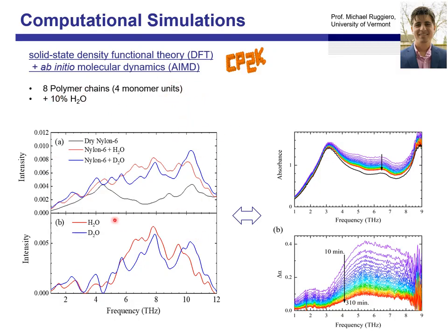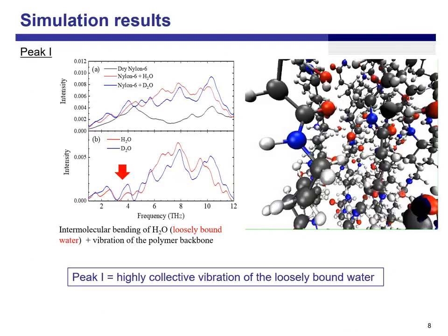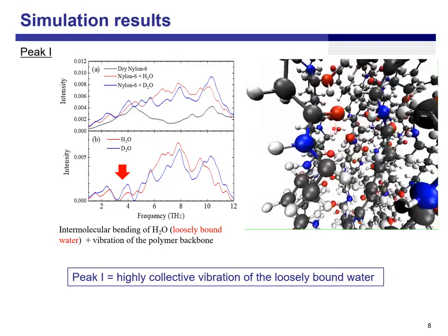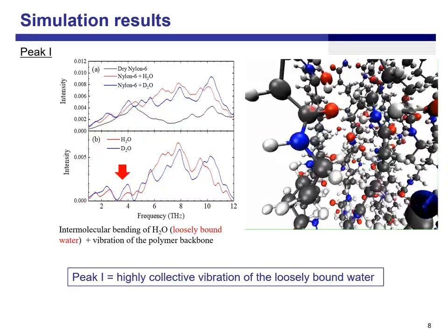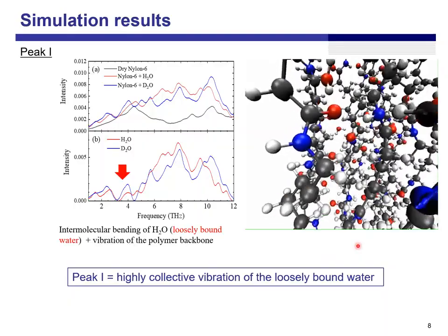This is the result. First, let us compare the simulated spectrum of dry Nylon 6 — the spectral pattern shows very nice agreement with the experimental one. Then he made simulations for hydrated nylon, shown as red and blue lines. By taking the difference of dry and wet nylon, we obtain the spectral pattern of bound water, which is also similar to the observed one. The good point of computational simulation is we can see the vibration modes. This is the vibration pattern of peak one — the water molecule is located inside here and vibrating. Interestingly, all atoms in the simulation move simultaneously, so this is a highly collective vibration.